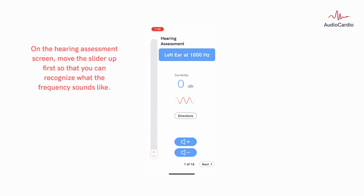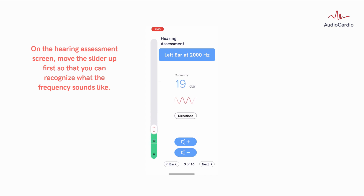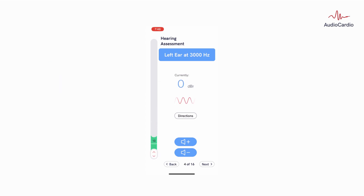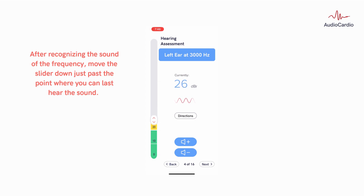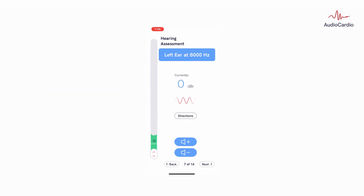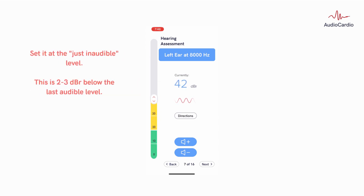On the hearing assessment screen, move the slider up first so that you can recognize what the frequency sounds like. After recognizing the sound of the frequency, move the slider down just past the point where you can last hear the sound. This is usually 2 to 3 dB below the last audible level.